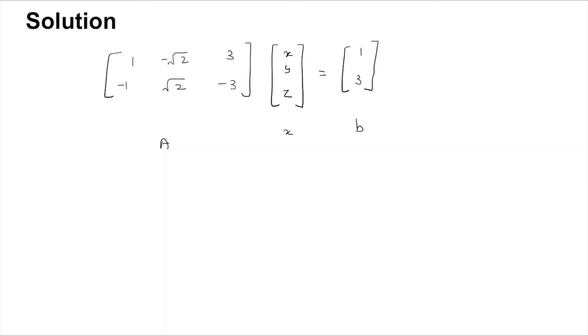You can form the augmented matrix [A|B] as so and perform the row operation R2 is R2 plus R1. You get this now as 1 minus root 2, 3, 1.